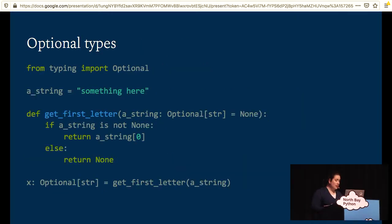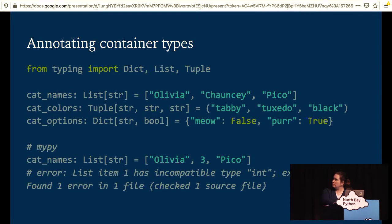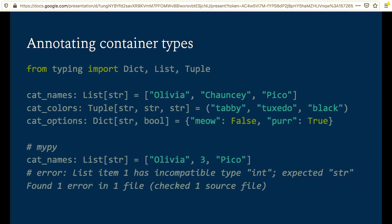You can also use type checking to annotate container types to only accept certain types within them. So for instance, if I have my list of cat names, if I try and put an integer into it, MyPy will complain.